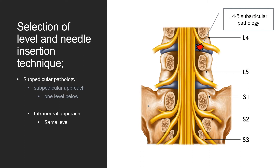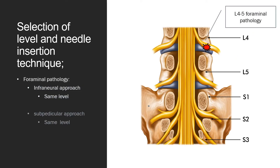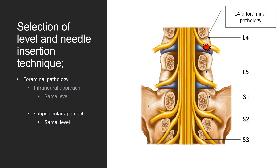For example, at L4-5 subarticular pathology, I take L4 infraneural injection. For foraminal stenosis or lateral type of HNP, I prefer the infraneural approach at the same level. For example, for foraminal stenosis at L4-5, I like to select the L4 infraneural approach. But I also select the subpedicular approach at the same level — for L4-5 foraminal stenosis, I commonly use L4 subpedicular injection.